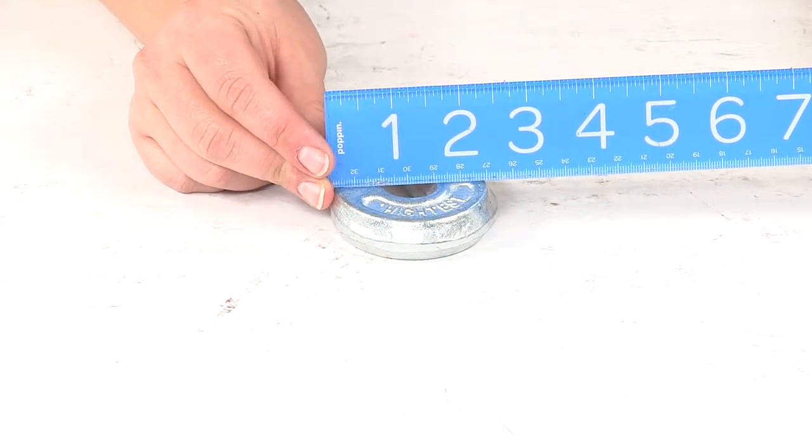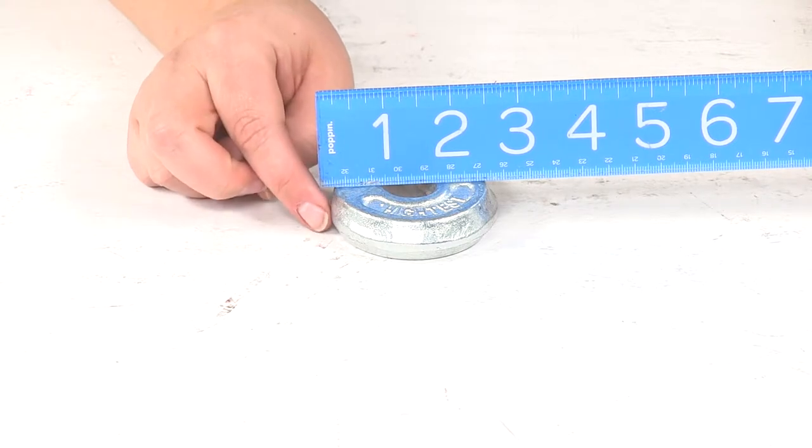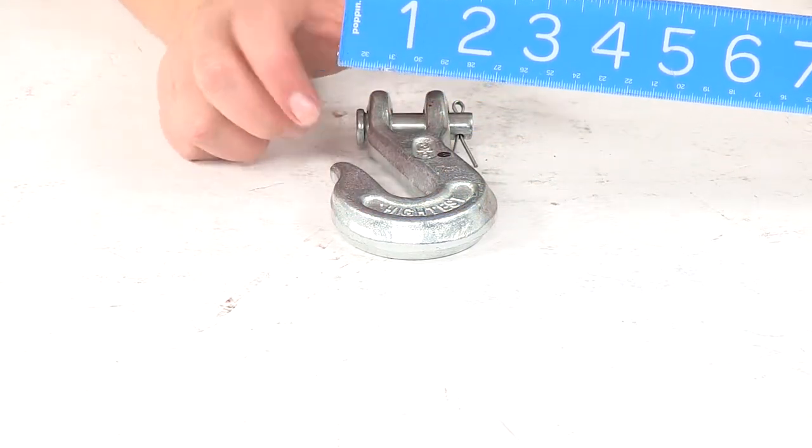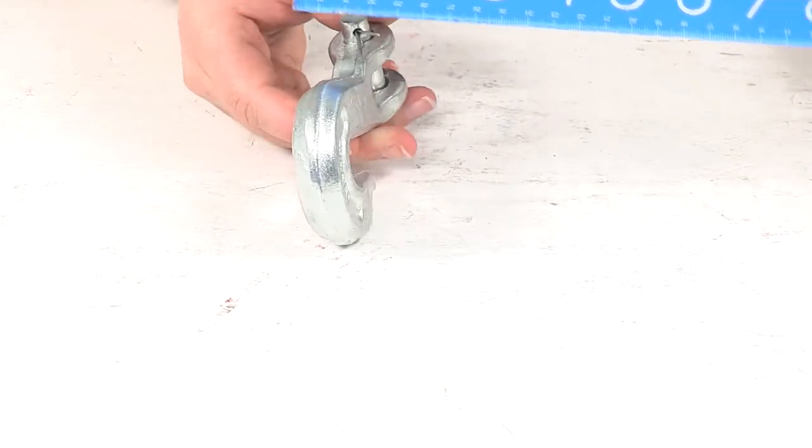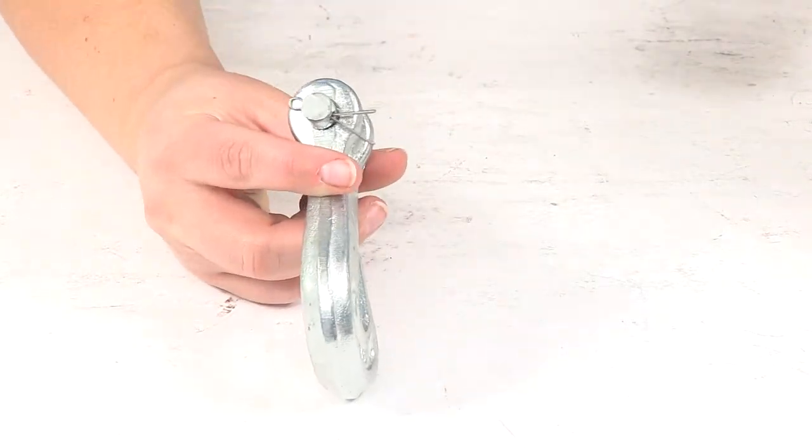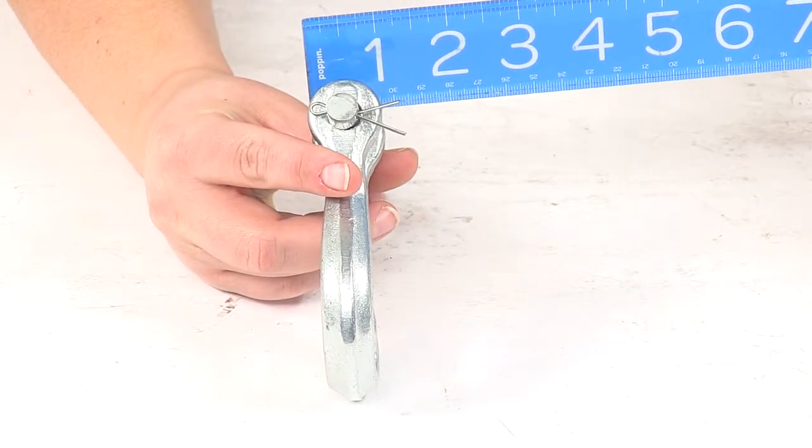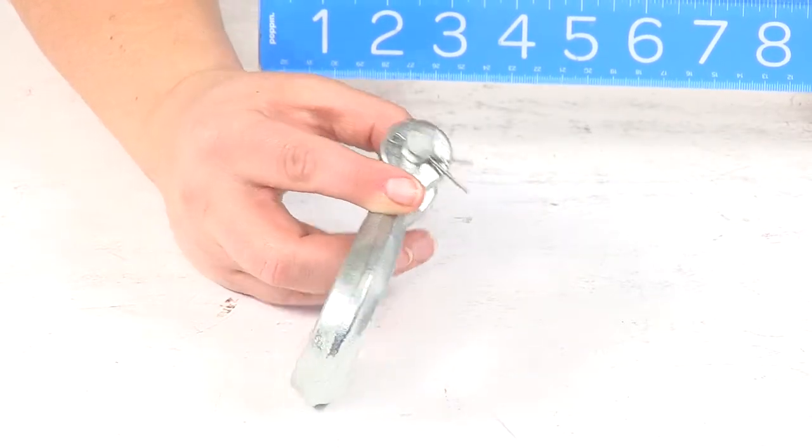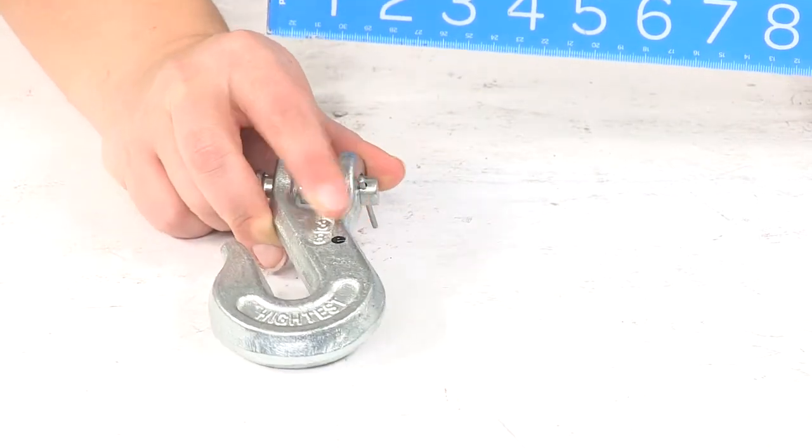It's going to be about 2 1/2 inches wide at the widest point of the hook where it bells out, and then it's going to be an inch thick at the rounded end for the hole that attaches the clevis pin.